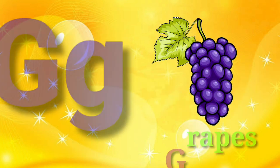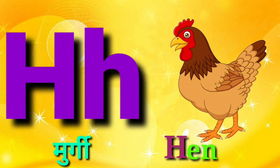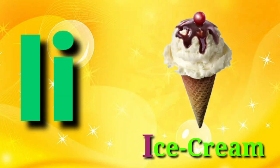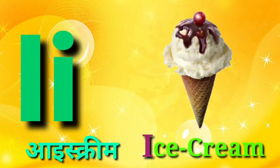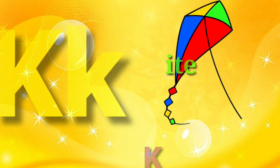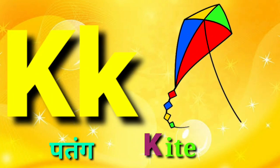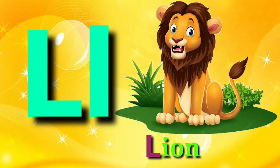G for Grapes, Grapes means Anggur. H for Hen, Hen means Murgi. I for Ice Cream, Ice Cream means Ice Cream. J for Joker, Joker means Joker. K for Kite, Kite means Patang. L for Lion, Lion means Sher.